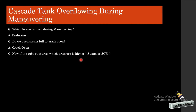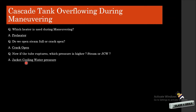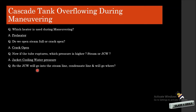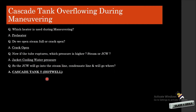Then which pressure is higher — the steam pressure or the jacket cooling water pressure? It is the jacket cooling water that has higher pressure. That means the jacket cooling water will mix into the steam line, and then through the condensate line, it will reach the cascade tank, or what we call the hot well. The cascade tank will start overflowing because of the surplus quantity of jacket cooling water entering.